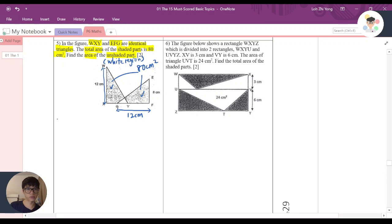So I want to find the area of two triangles. It will be 2 times 1/2 times 12 times 8. I can simplify, and 12 times 8 will be 96 cm squared.